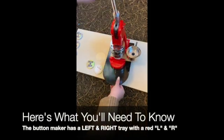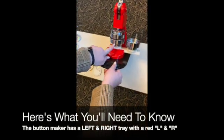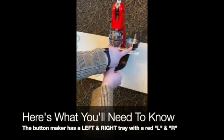Here's what you'll need to know. The button maker has a left and right tray with a red L and R.